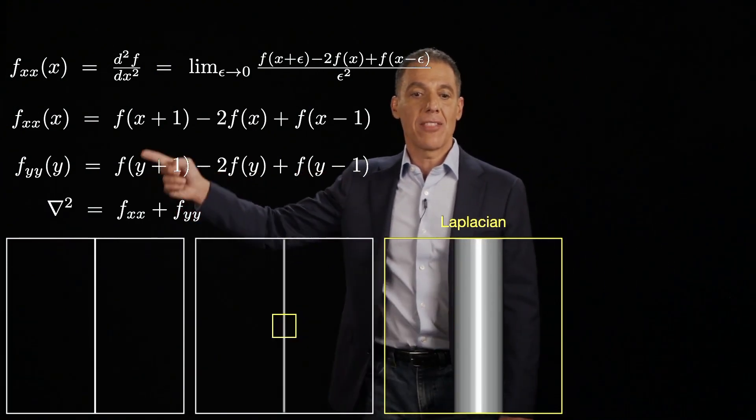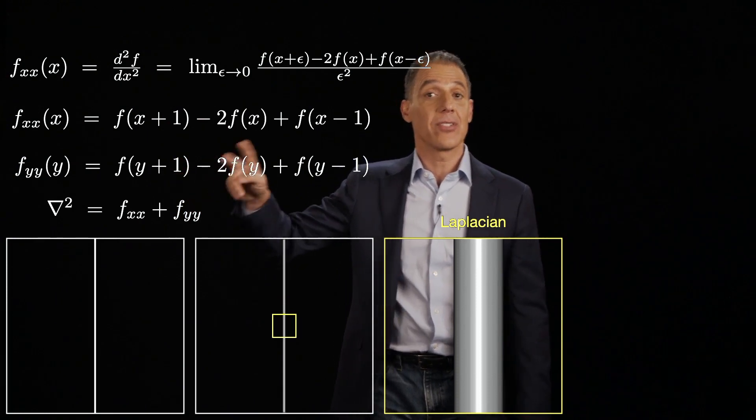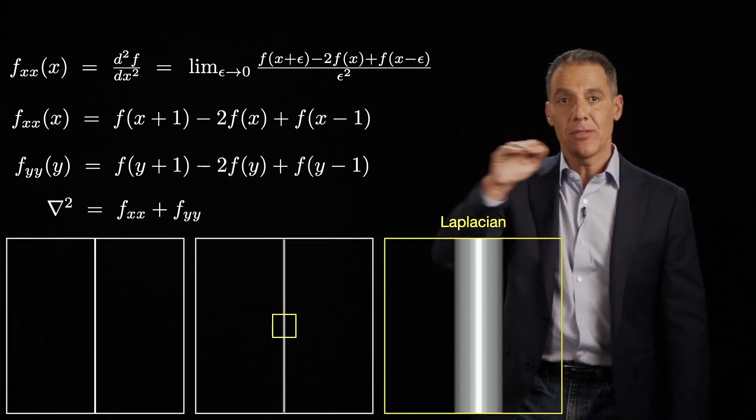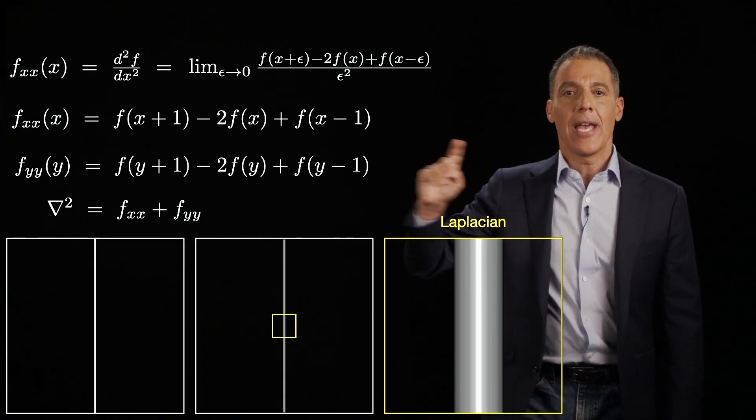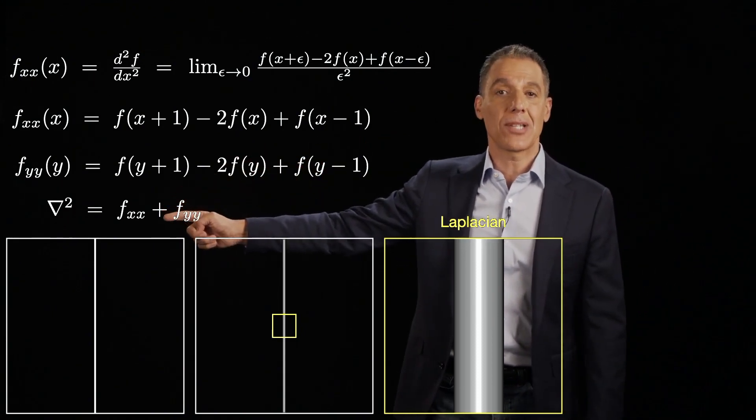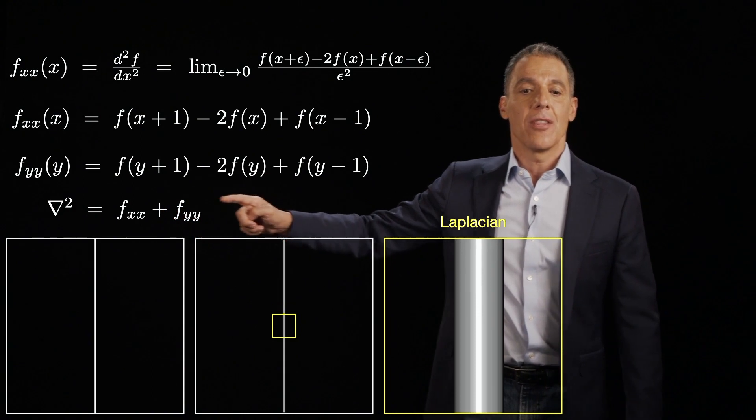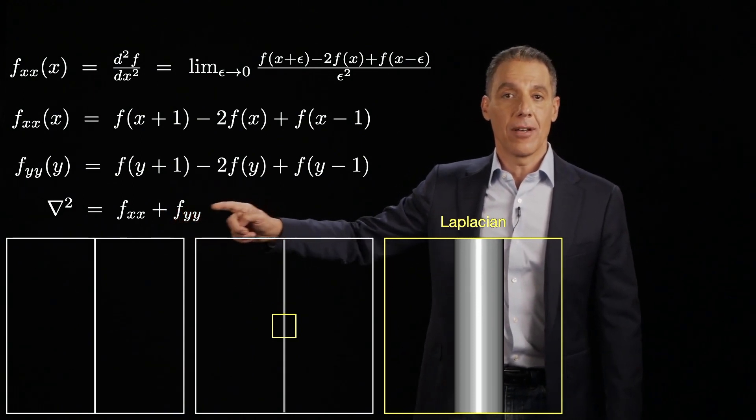And now what I'm going to do is take these two directional derivatives, second order directional derivatives, one in the x direction, one in the y direction. And I'm going to compute the so-called Laplacian, which is the sum of the two.